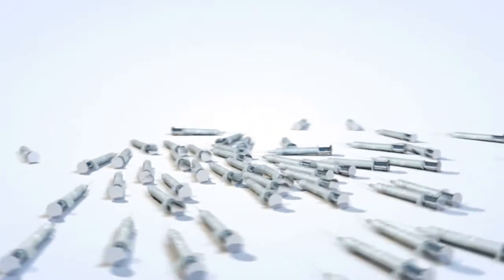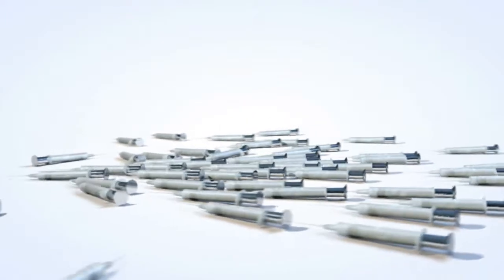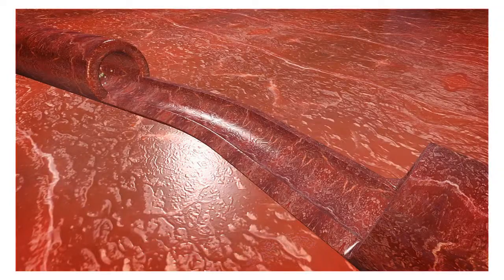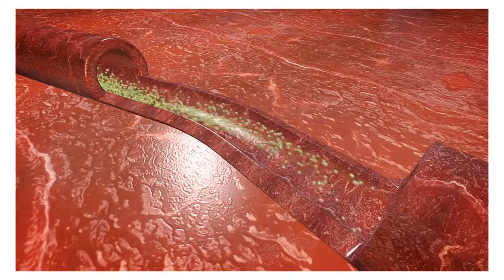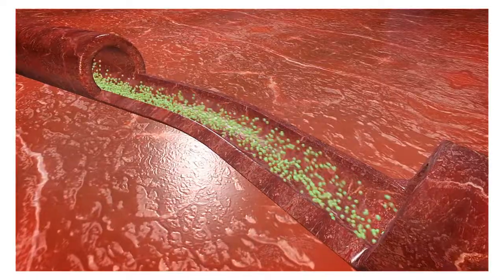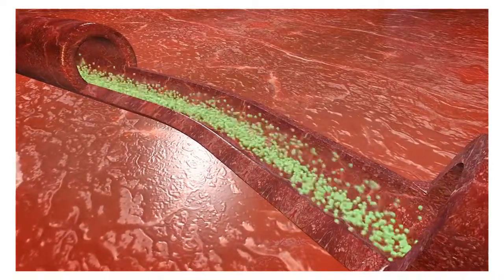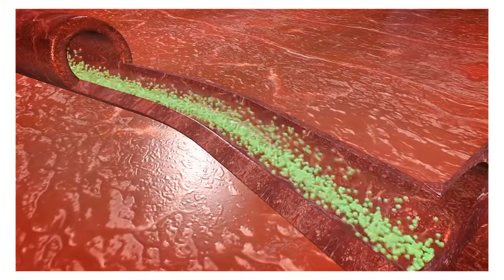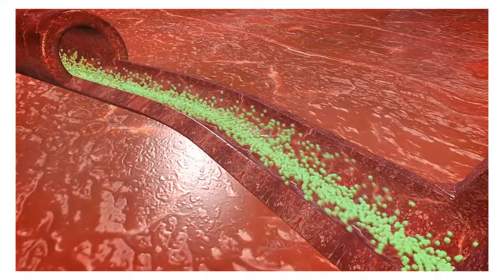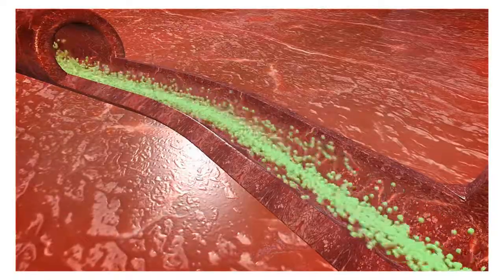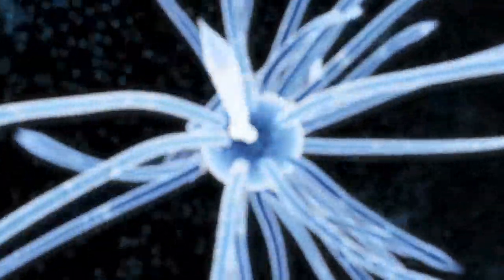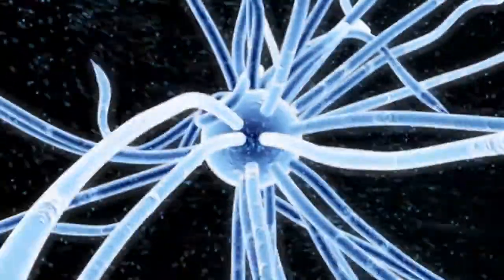High-dose chemotherapy with stem cell transplant can help remove the substance that leads to amyloid formation in those with primary AL amyloidosis who have no more than two major organs damaged. Chemotherapy medicines alone are used to treat other patients with primary AL amyloidosis.